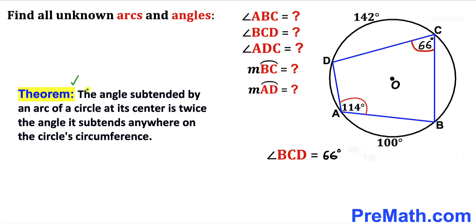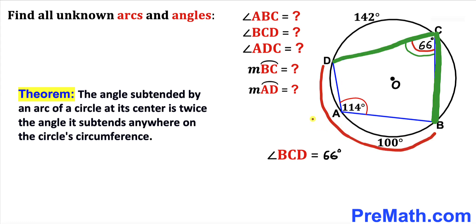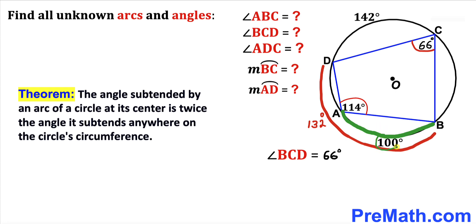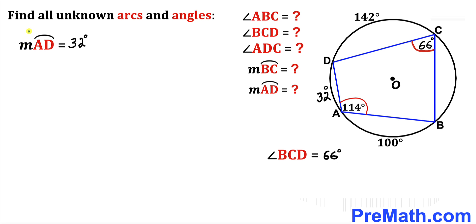Now let's recall another theorem: the angle subtended by an arc at the center is twice the angle it subtends anywhere on the circle's circumference. Focusing on angle BCD at the circumference, the measurement of arc BD is twice 66 degrees, giving us 132 degrees. Since arc AB is 100 degrees, the remaining arc AD is 132 minus 100, which gives us 32 degrees.